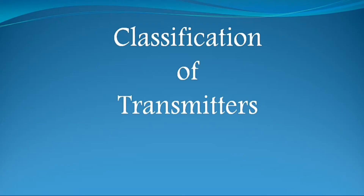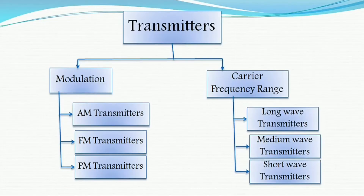The radio frequency transmitters, or RF transmitters, may be classified according to the type of modulation used and also according to the frequency range of the carrier signal. So in brief, based on the type of modulation the transmitter is classified, and also based on the carrier frequency range the transmitters are classified.